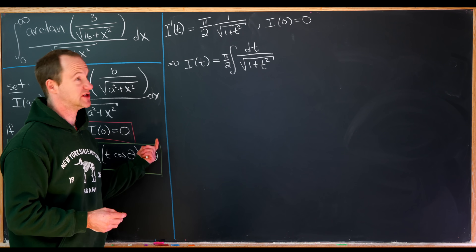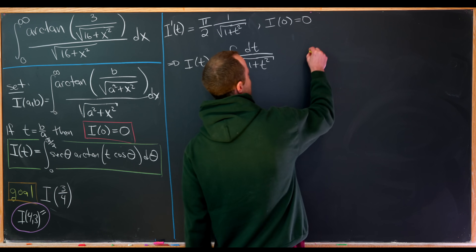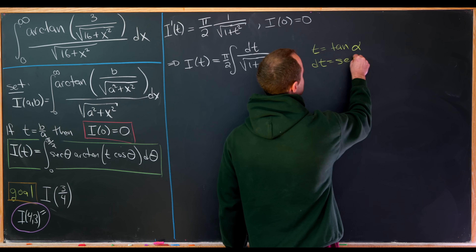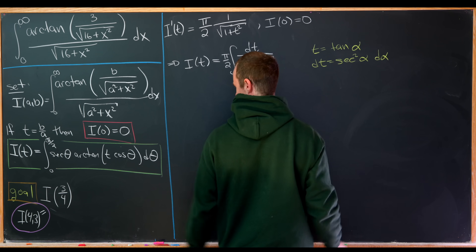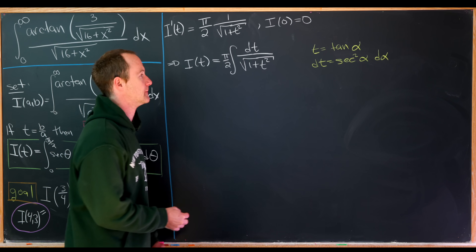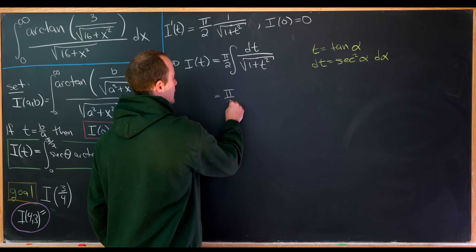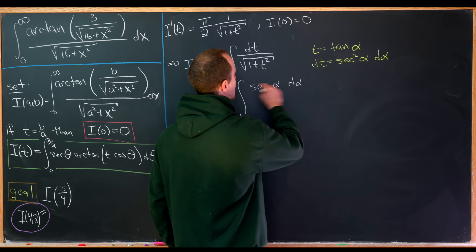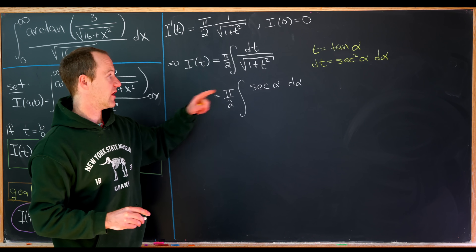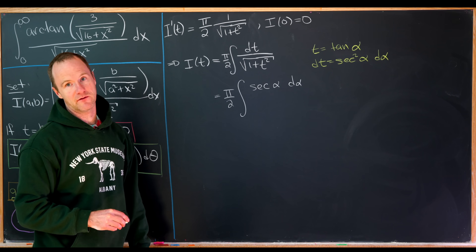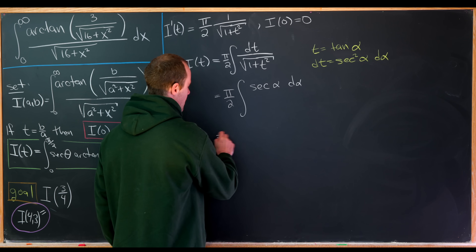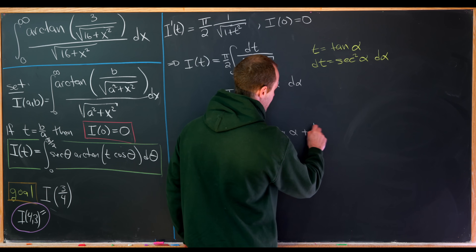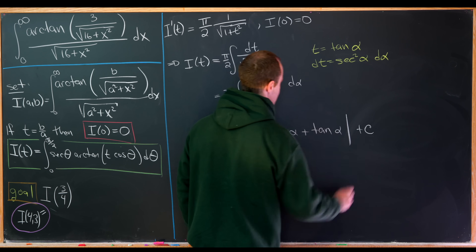Our best strategy is another trigonometric substitution. Set t equal to tangent of alpha, so dt equals secant squared of alpha d alpha. That simplifies the integral to pi over 2 times the antiderivative of secant squared alpha over secant alpha, which is just secant of alpha. The antiderivative of secant alpha is the natural log of the absolute value of secant alpha plus tangent alpha, plus a constant.